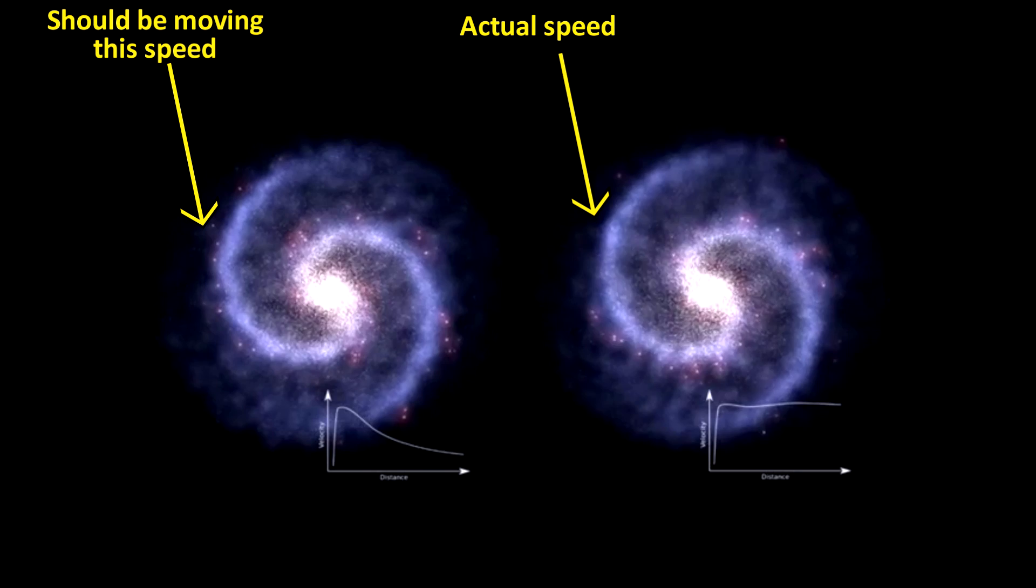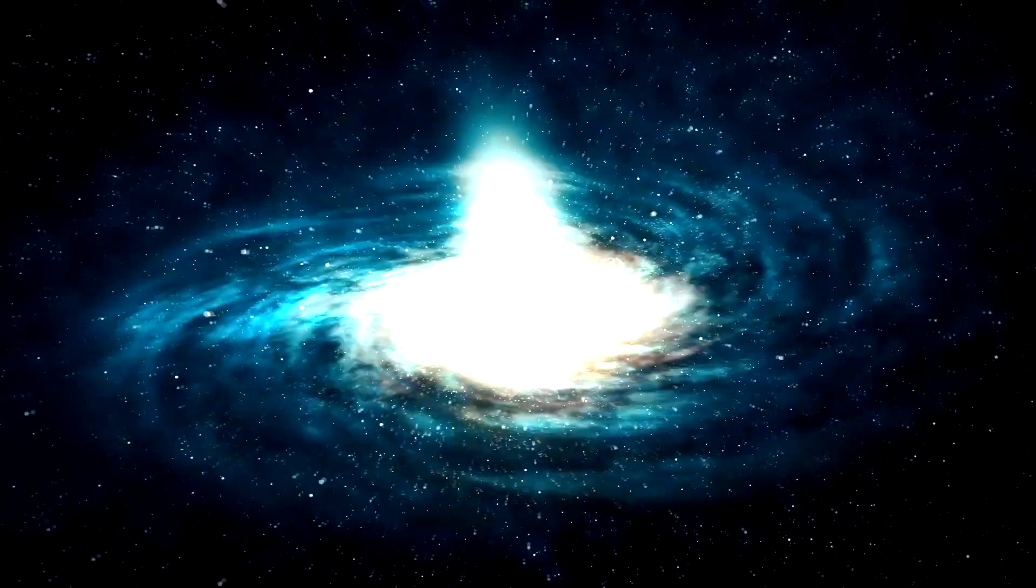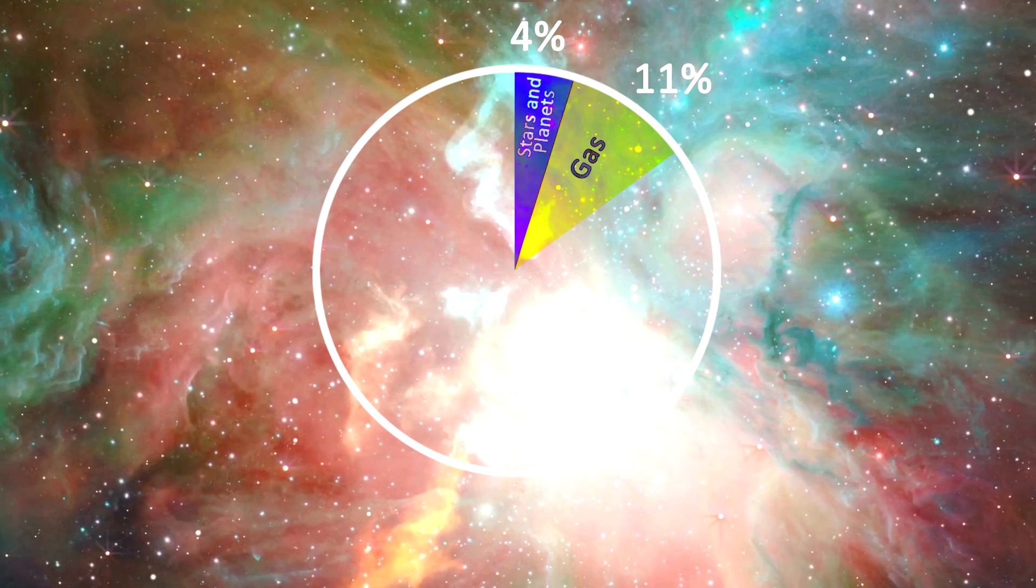This faster than predicted motion, it was theorized, is due to the extra unseen matter, or dark matter, that surrounds all galaxies. And the amount of dark matter needed to make this galaxy behave the way that it does is about six times more than the observable matter. So this dark matter makes up about 85 percent of all matter, and 15 percent is the visible matter that we can see.